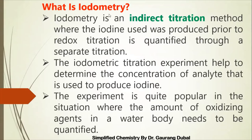What is iodometry? Iodometry is an indirect titration method where iodine used was produced prior to the redox titration and is quantified through a separate titration. The iodometric titration experiment helps to determine the concentration of the analyte that is used to produce iodine.